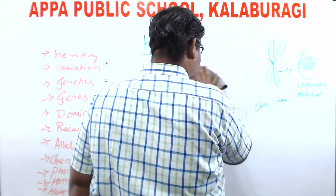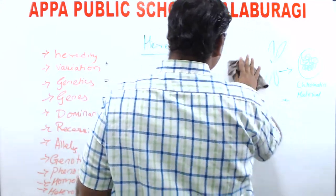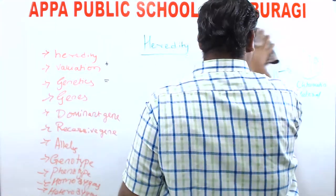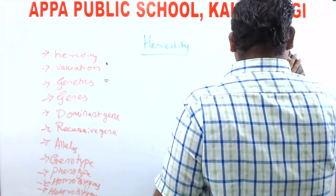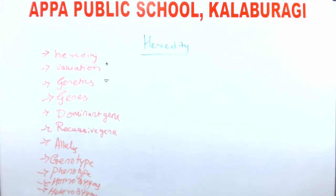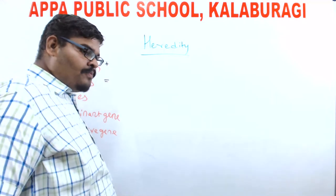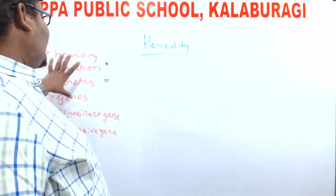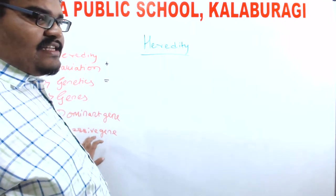Through these genes only, information passes from one generation to the next. Genes are segments of DNA. DNA is located in chromosomes. Chromosomes are made up of coiled chromatin material inside the nucleus. Gene is the unit of heredity. A gene can be defined as the section of DNA which helps in the transfer of genetic information from one generation to another generation.